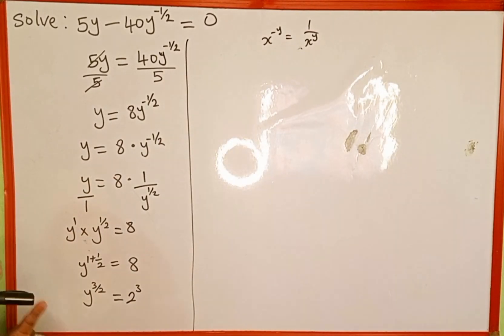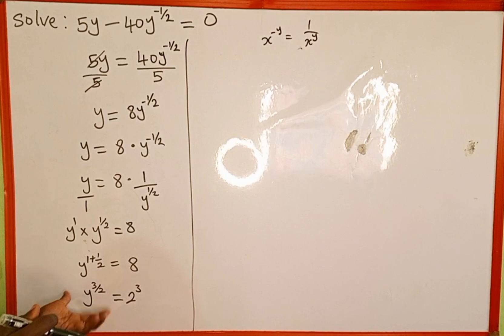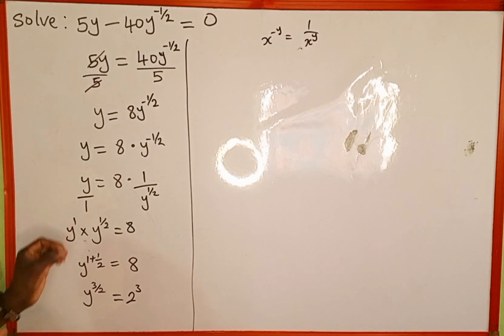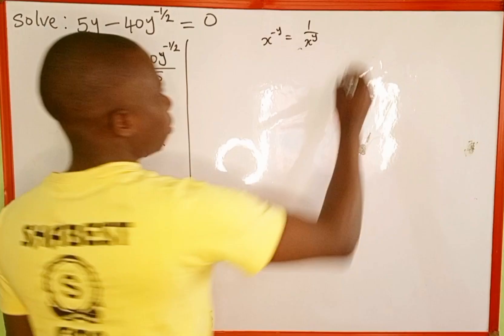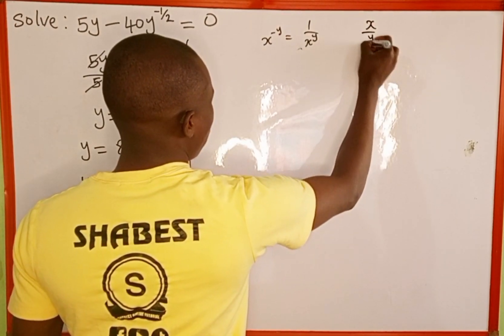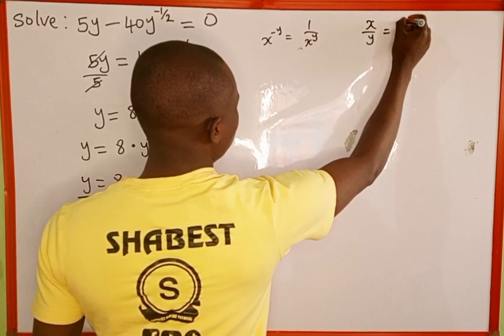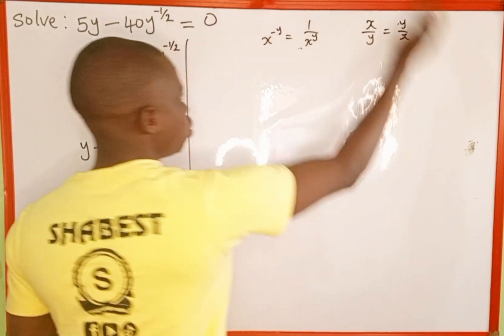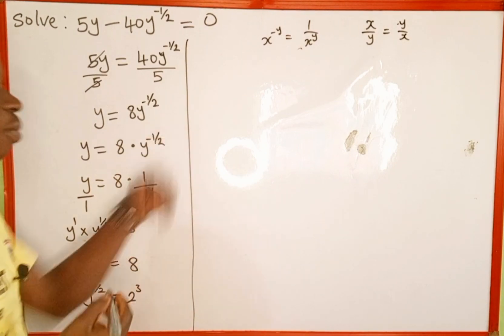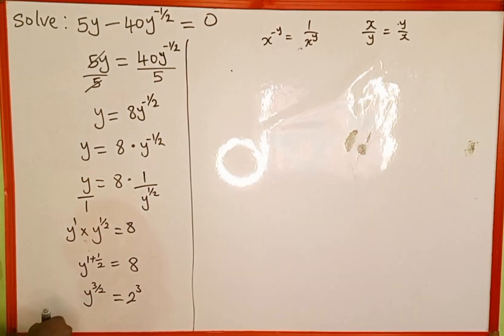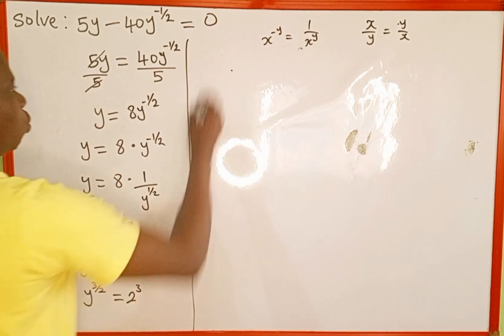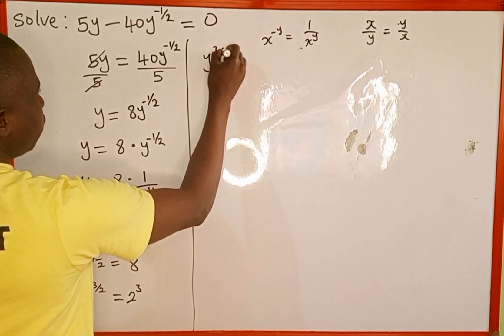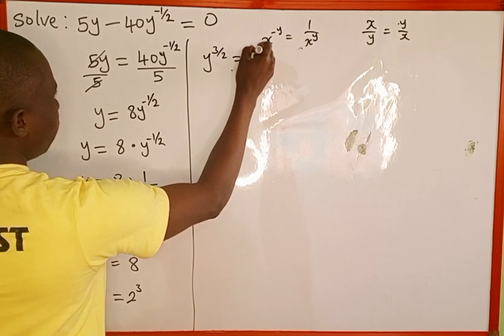The next thing we're going to do — remember we are looking for the value of y — is to raise both sides of this equation by the reciprocal of 3 over 2. The reciprocal means: for instance, when we have x over y, the reciprocal is y over x — we just switch, turning the numerator to denominator and the denominator to numerator. So we raise both sides by the reciprocal of 3 over 2, giving us y raised to the power of 3 over 2 equals 2 to the power of 3.